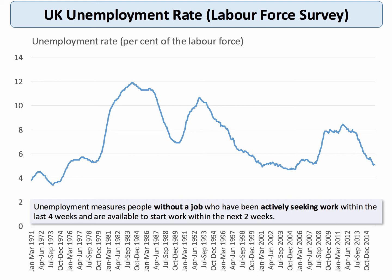The unemployment rate measures the percentage of people without a job who have been actively seeking work in the last four weeks, and who can start working the next fortnight. As you can see, the long-term trend in unemployment is downwards. With each successive peak since the early 1980s, the rate of unemployment has come down from about 12% to just under 11% to just over 8%.